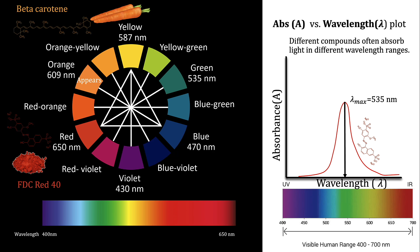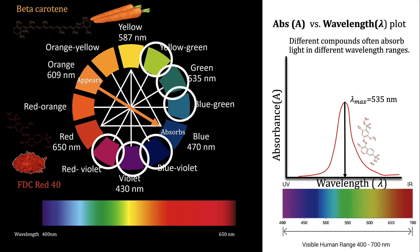Beta-carotene, which is responsible for the color of carrots, absorbs mostly blue light and other colors around blue, and transmits back mostly orange light as well as other colors to lesser degrees. An examination of the corresponding absorbance versus wavelength graph of beta-carotene bears this out.